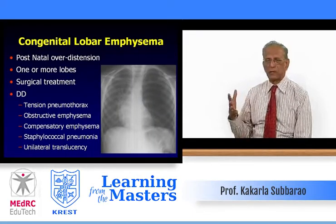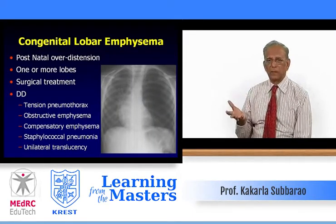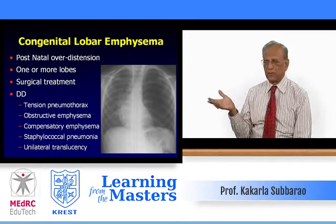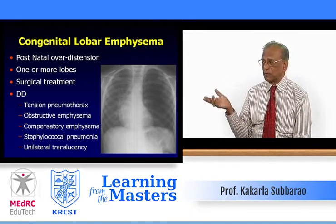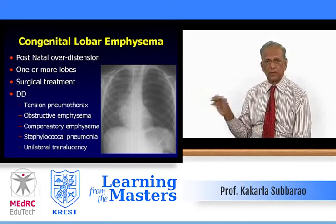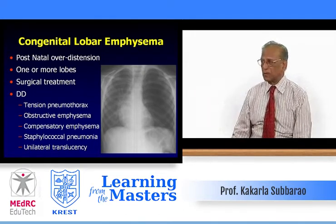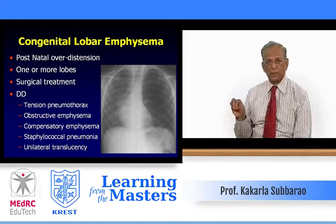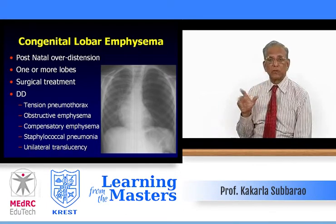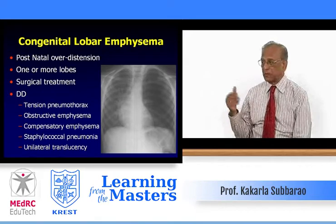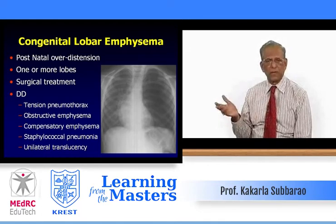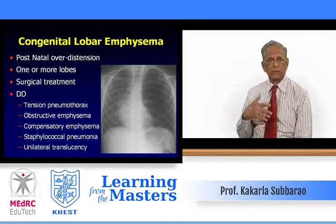Lobar emphysema: postnatal overdistension that generally manifests in infancy, affecting one or more lobes — surgical treatment is the only choice. Differential diagnosis includes tension pneumothorax. On PA chest the left hemithorax is completely lucent — you may think of obstructive emphysema or compensatory emphysema for the right lung, partial agenesis, or bronchiectasis from staphylococcal pneumonia producing a large pneumatocele that eventually resolves. Unilateral transradiancy has various causes from soft tissue absence (e.g., absent pectoralis muscles) to MacLeod-Swyer-James syndrome.